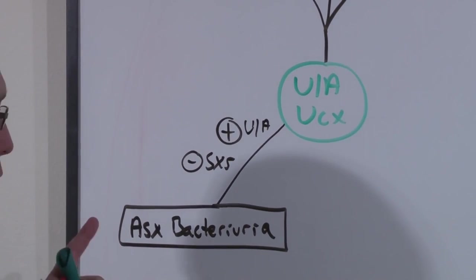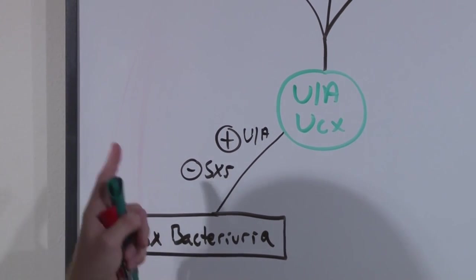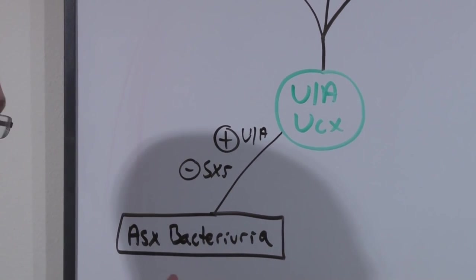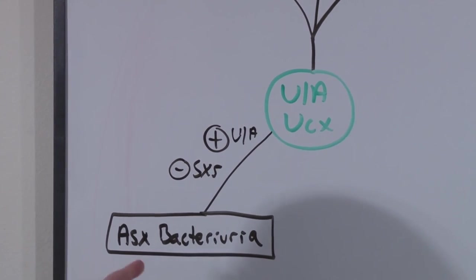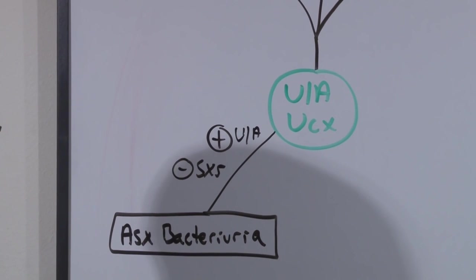The thing is that in normal patients who are not pregnant, you do not screen and you do not treat asymptomatic bacteriuria. But in a pregnant patient, this bacteria may get into the vagina and then up to baby, so you do want to treat.